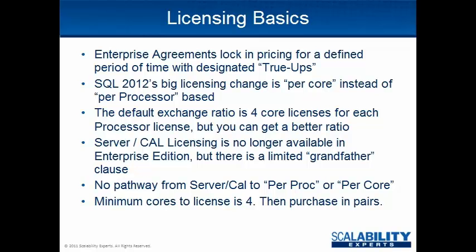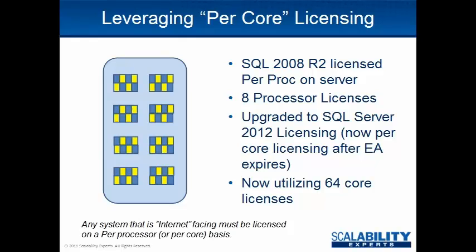Let's talk about some licensing basics. Many organizations have something called an Enterprise Agreement, often referred to as EA or EAP — Enterprise Agreement Platform. It locks in pricing for a defined period of time, usually two, three, or four years, with designated true-ups. These are checkpoints where you see where you are relative to how much you bought and make an adjustment. Usually at the end of the agreement there is another true-up so that you pay for what you've been using.